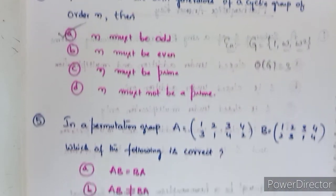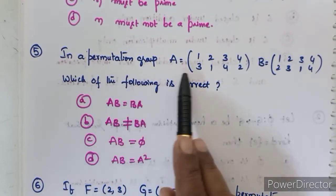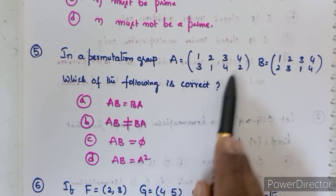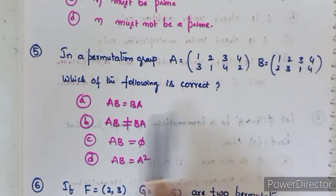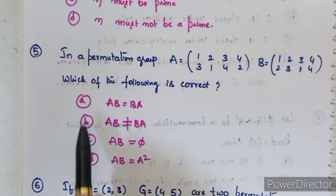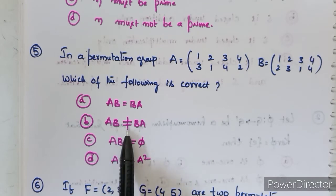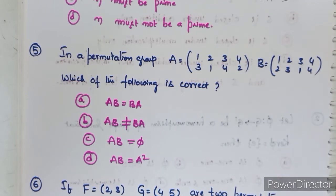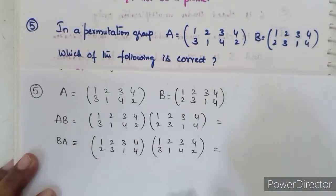Fifth question: in a permutation group, A = (1 3)(2 1)(3 4)(4 2) and B = (1 2)(2 3)(3 1)(4 4). Which of the following is correct: AB = BA, AB ≠ BA, AB = 5, or AB = A²? First, we find A·B.